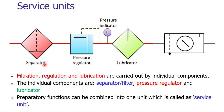As seen, a separator, pressure regulator, and lubricator are essential elements of compressed air treatment. In industry, the separator is also called a filter, so together they form the FRL unit — Filter, Regulator, and Lubricator — which is a service unit. This package is available in industry and is represented by a graphical symbol on screen: the separator symbol, the regulator with pressure indicator, and the lubricator.